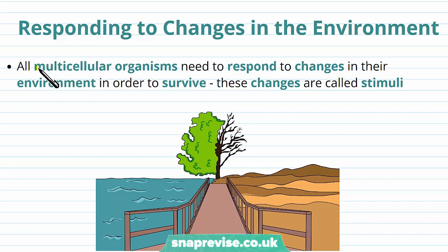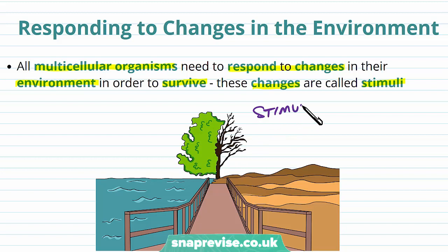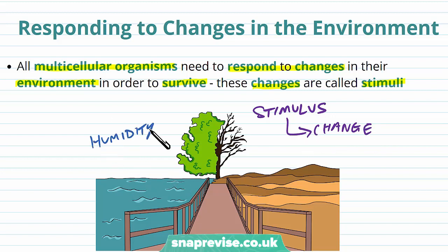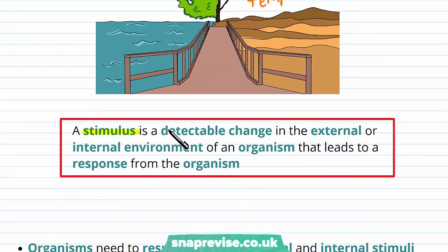Any multicellular organism needs to be able to respond to changes in their environment because they have to try and survive for as long as possible. Changes in the environment are defined as stimuli. A stimulus in the environment is basically a factor in the environment which changes — for example the level of seawater, the humidity of the air, or changes to temperature. By definition, a stimulus is a detectable change in the external or internal environment of an organism leading to a response from that organism.